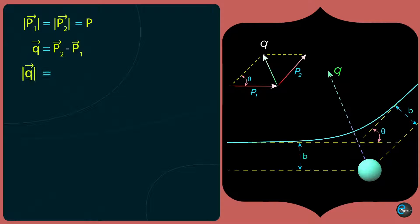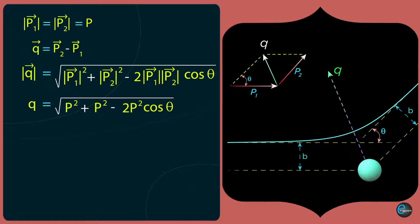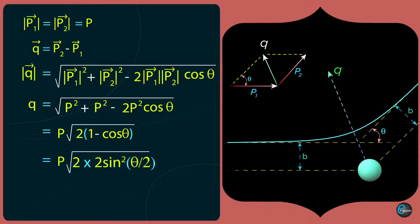From the diagram, the magnitude of vector q = √(|p₁|² + |p₂|² − 2|p₁||p₂|cosθ). This gives q = √(p² + p² − 2p²cosθ) = p√(2(1 − cosθ)). Since 1 − cosθ = 2sin²(θ/2), we can write q = p√(4sin²(θ/2)), which gives q = 2p·sin(θ/2).